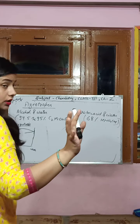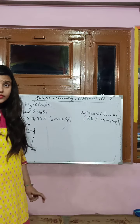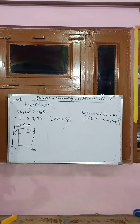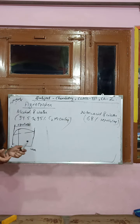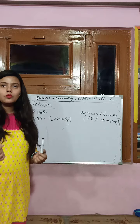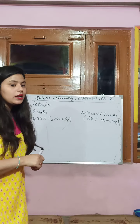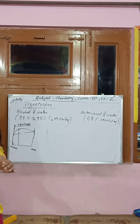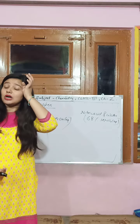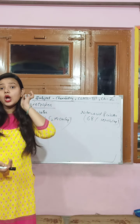Sorry, there is an error in the first video, so that's why we are continuing in the second video. If we are talking about the azeotropic mixture, there are two types of boiling: minimum boiling and maximum boiling. When the vapor pressure increases — that is a positive deviation — vapor pressure will increase.